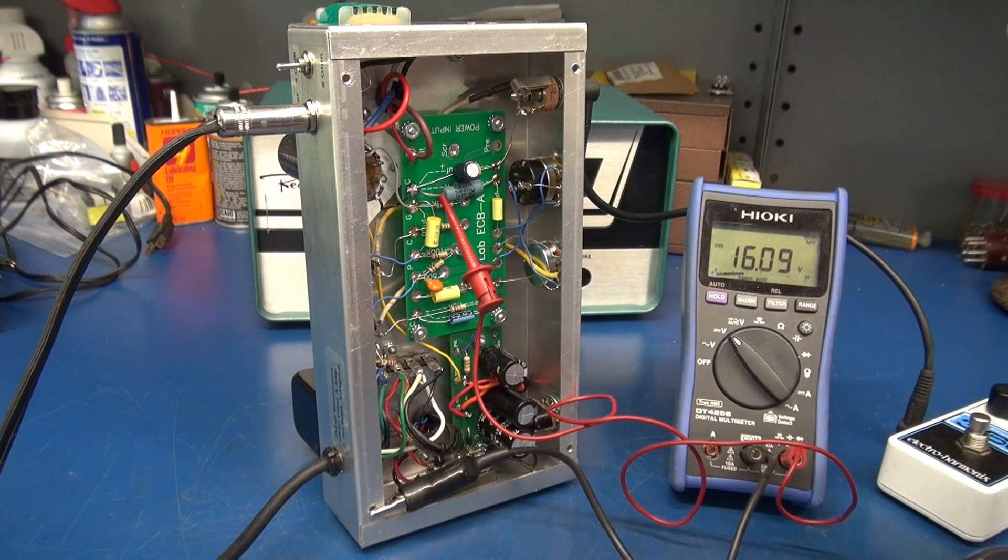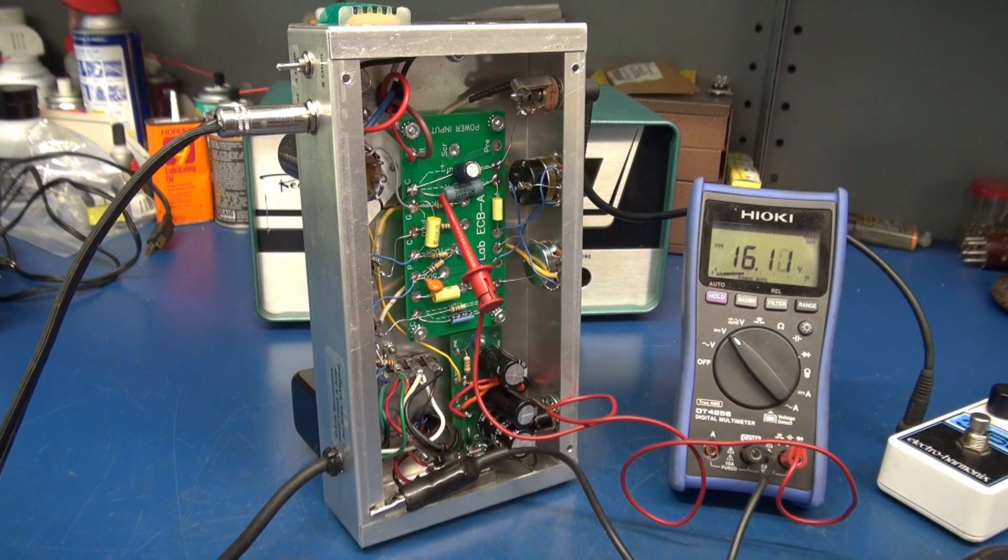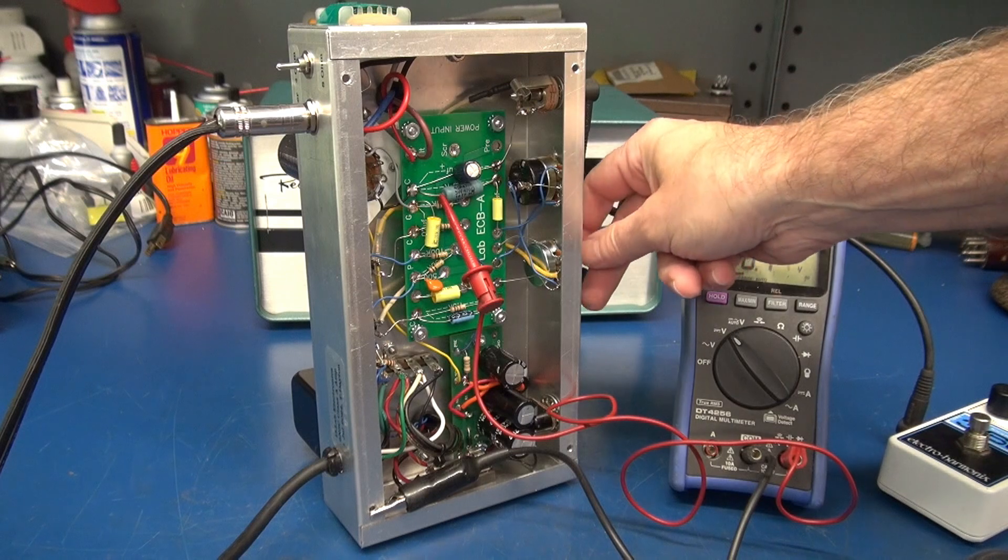So it's unique that when you put in the 6N3C, it pulls more current, but yet it's still safe to run with a 6V6. No bias adjustments required.